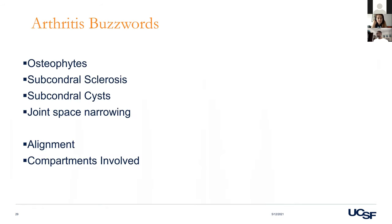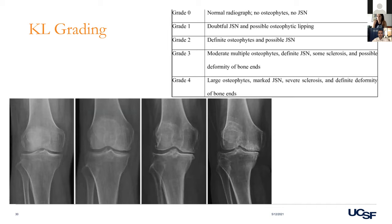The Kellgren-Lawrence grading system is a scale of 0–4 for progressively worsening arthritis. Grade 0 is none; grade 1 is unlikely arthritis; grade 2 is mild with posterior changes on the notch view; grade 3 shows joint space narrowing and subchondral sclerosis; grade 4 is frank degenerative changes with osteophytes, sclerosis, and full-thickness narrowing. You can think of it as grade 2 mild, grade 3 moderate with partial-thickness narrowing, and grade 4 severe.